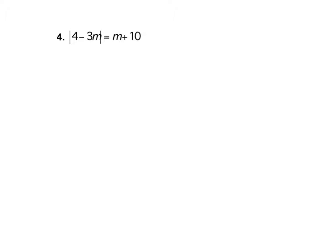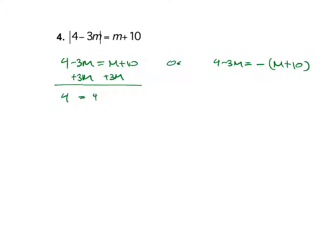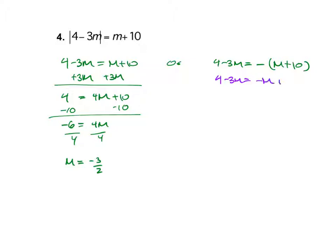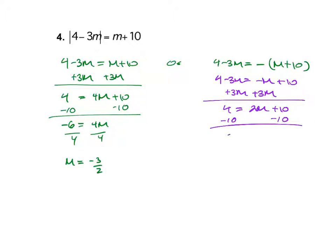So for number 4, I don't have to do anything before starting. So just 4 minus 3m equals m plus 10, or 4 minus 3m equals negative m plus 10. Adding 3m on both sides: 4 equals 4m plus 10, minus 10 gives negative 6 equals 4m, divided by 4 gives m equals negative 3/2. For the second equation: 4 minus 3m equals negative m plus 10, adding 3m gives 4 equals 2m plus 10, minus 10 gives negative 6 equals 2m, divided by 2 gives m equals negative 3.